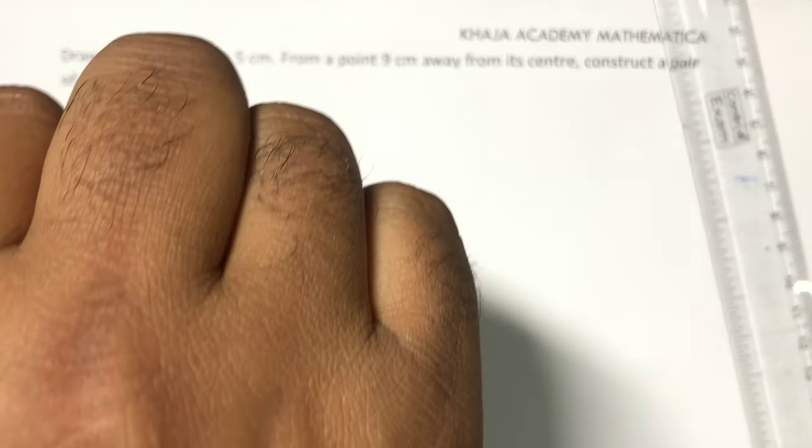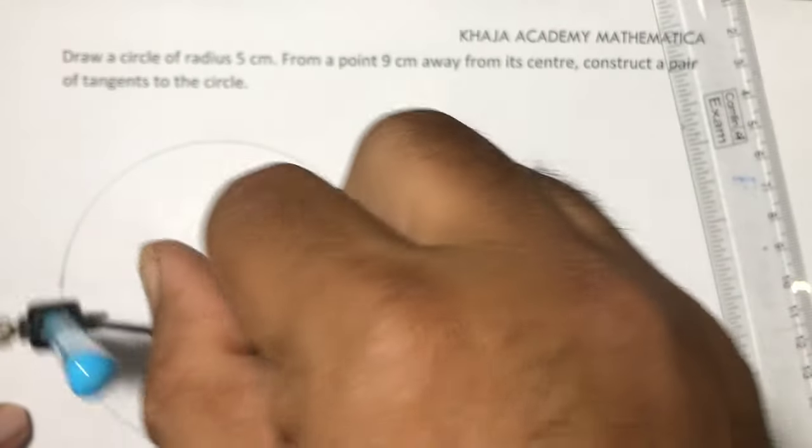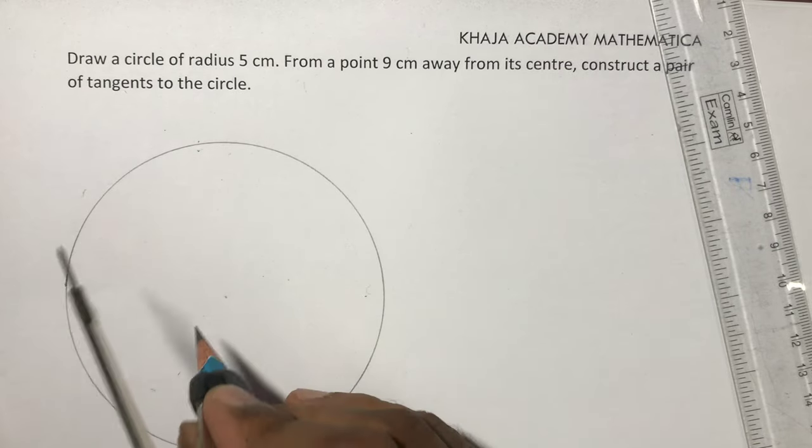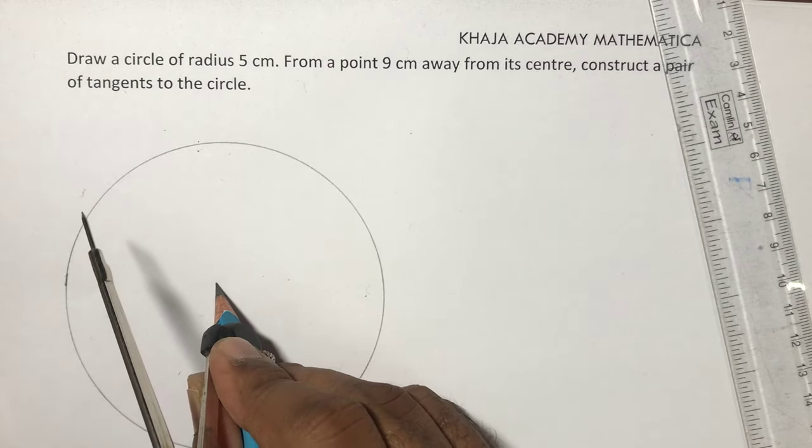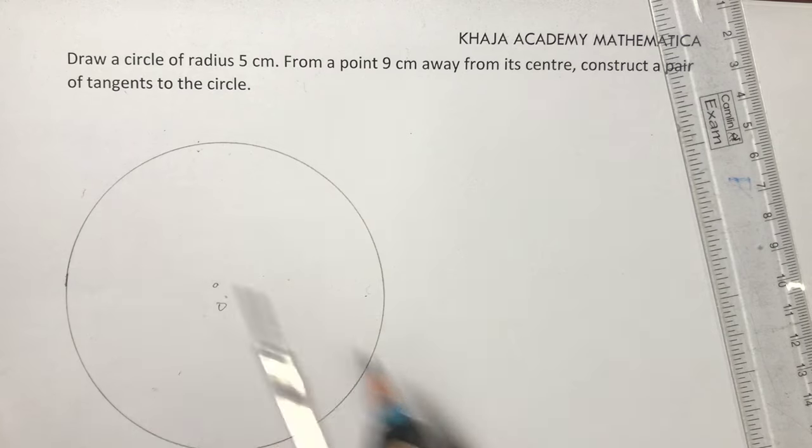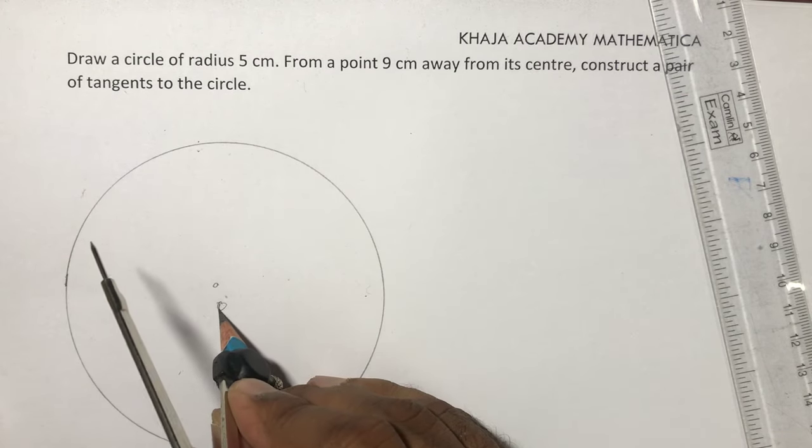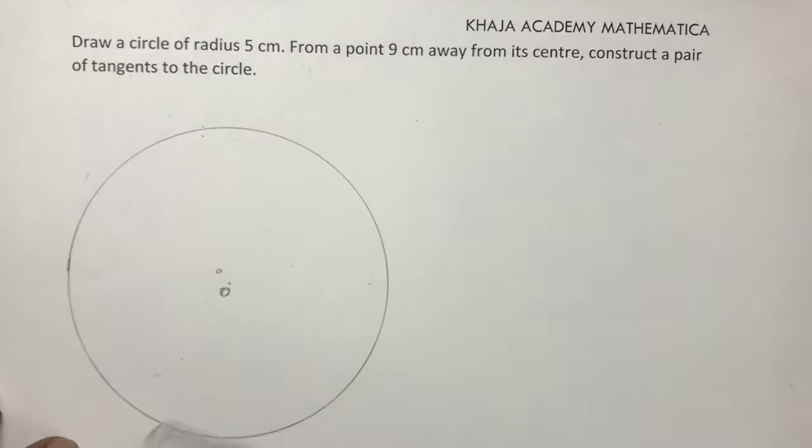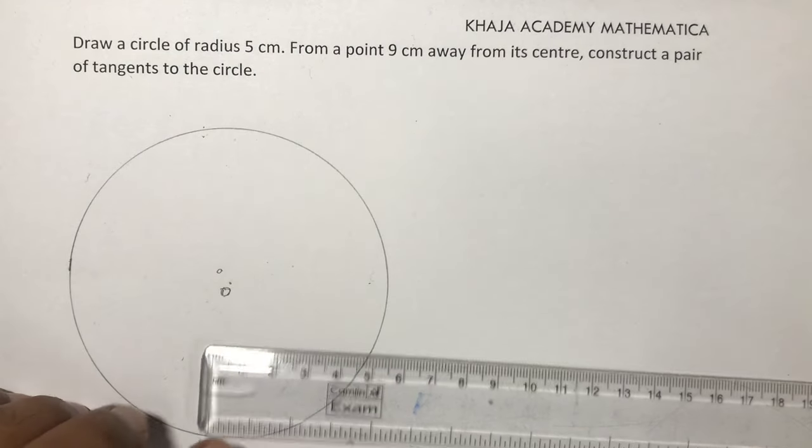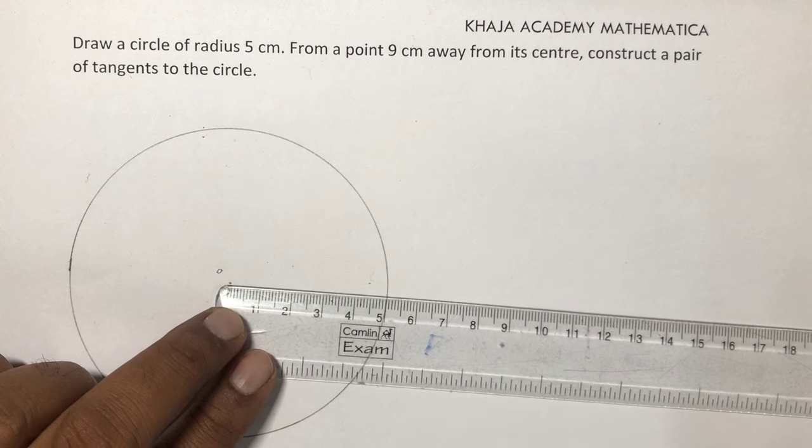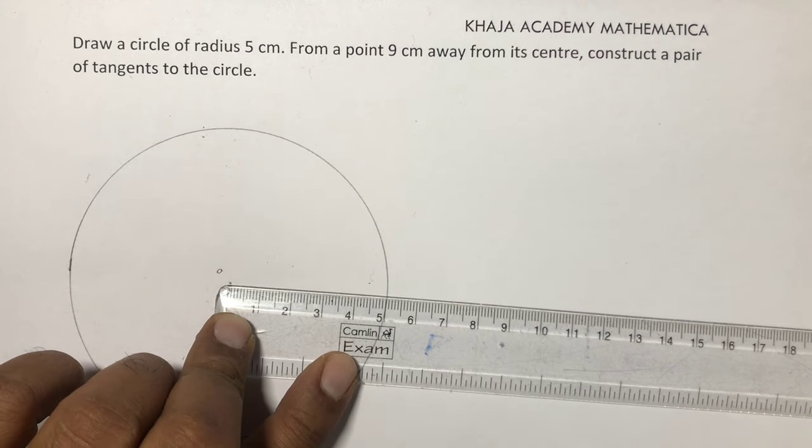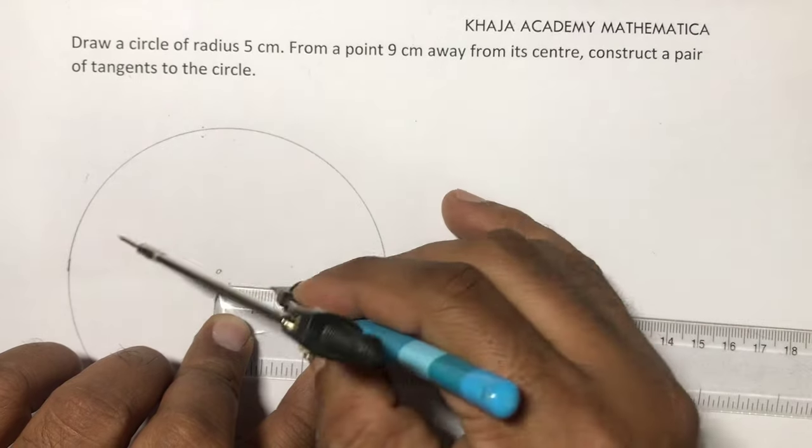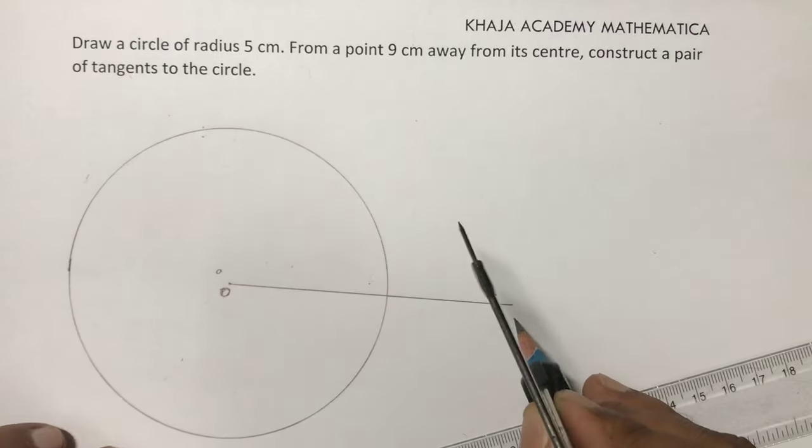This circle is of radius 5, so this is the center O. Now from this O I need to draw the tangent from the point which is 9 centimeters away. So from here I'll take 9 centimeters away. This is the point P, which is 9 centimeters away from the center.